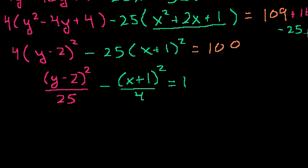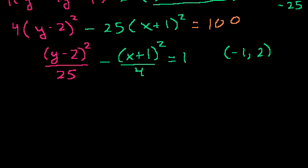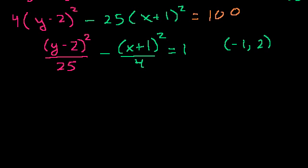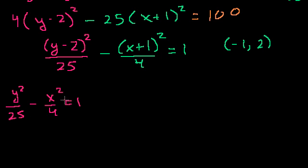Now let's graph this hyperbola. The center is at x equals minus 1, y equals 2. To figure out the asymptotes, I always use the version centered at 0: y squared over 25 minus x squared over 4 equals 1. It's easier to work with that form to find what the asymptotes would be, and then shift them to our actual center.